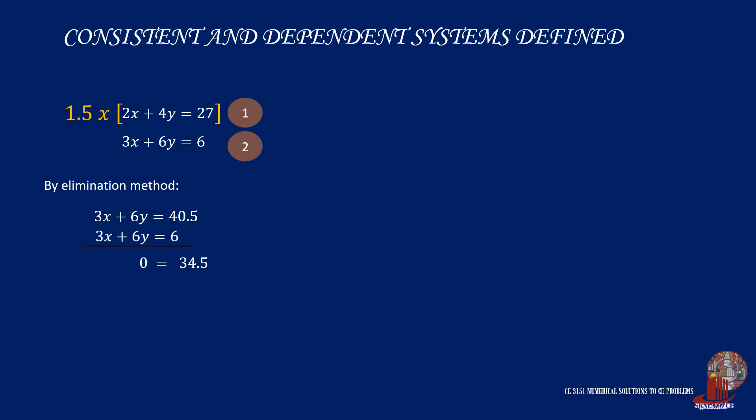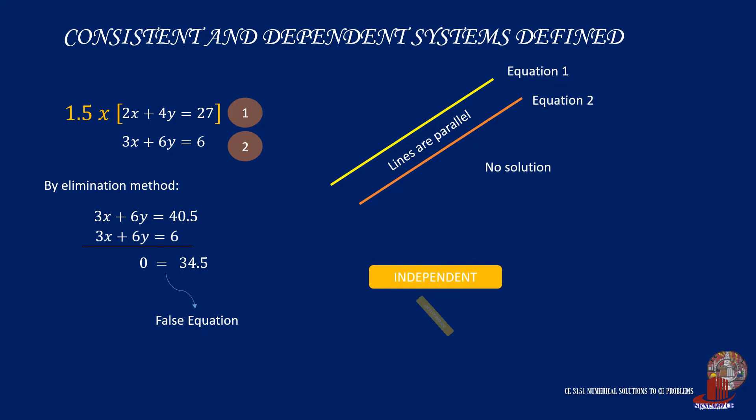thus having 0 as equal to 34.5. At this point, we note that this is a false equation. Let's prove further by illustrating the lines where it is shown that equations 1 and 2 are actually parallel. And since there is no intersection at all, there would not be any solution. This case is described as independent but inconsistent.